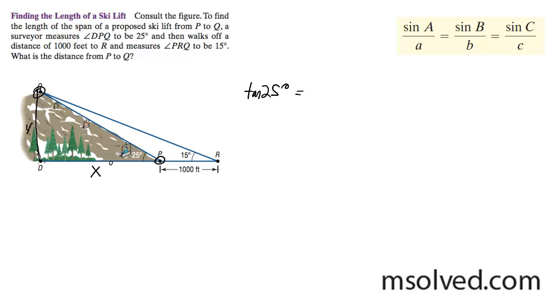And then from D to R, that's going to be X plus 1,000. So this is going to be Y over X, and then the tangent 15 degrees is equal to Y over X plus 1,000.